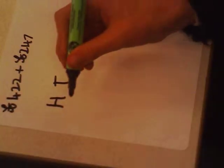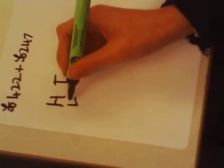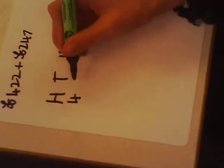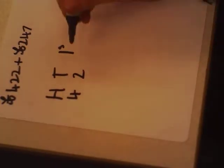And then you put 400 in the hundreds column, and then you put 20 in the tens column, and you put 2 in the ones column. Then you do the same for 247.